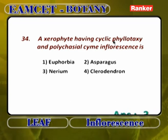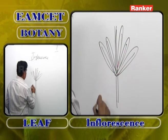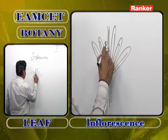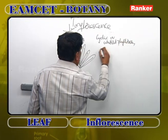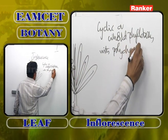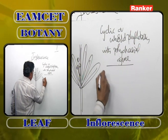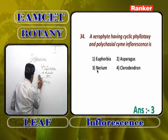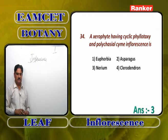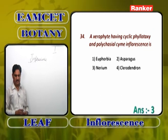An exidophyte with whorled phyllotaxy and polychasial cyme inflorescence — whorled phyllotaxy means more than two leaves at each node, and from the axils, inflorescences are formed. Polychasial cyme: peduncle grows definitely and ends as a flower, from the lower side more than two lateral branches develop, they also become flowers. Polychasial cyme is found in nerium. Euphorbia is cyatheum, asparagus has simple raceme, clerodendron has dichasial cyme. Answer: nerium.